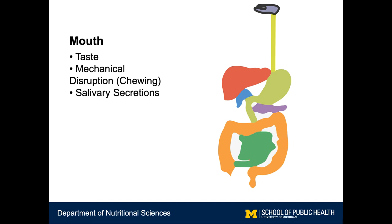The first step is starting in the mouth. That's where taste and smell allow us to detect the food. This is part of the cephalic response, which actually triggers some of the digestive system happening below the mouth. An important aspect of what goes on in the mouth is mechanical disruption of food, largely by chewing, but also by churning via the muscles in your tongue and your cheeks. There are also a variety of salivary secretions from your salivary glands that provide both enzymes and lubrication to allow food to pass easily into the esophagus.